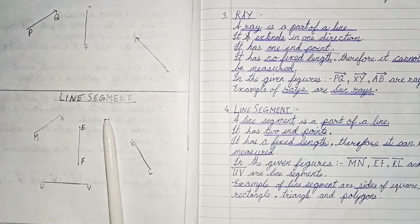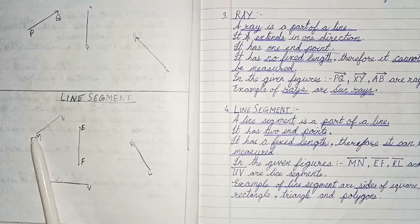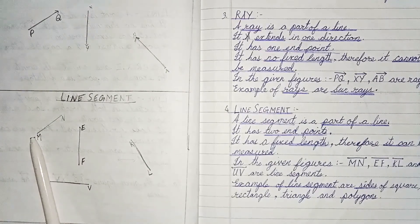Next, line segment. A line segment is a part of a line. It has two endpoints and it has a fixed length also. So therefore it can be measured.